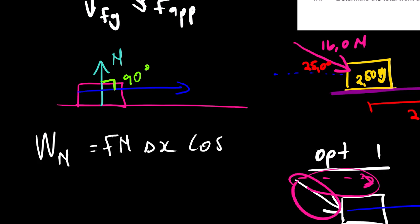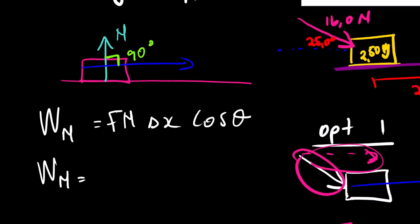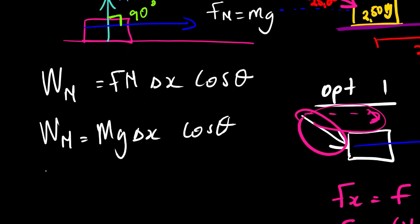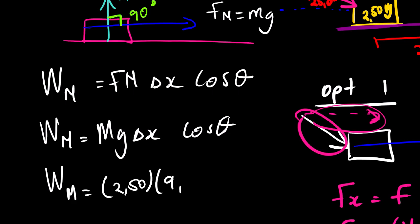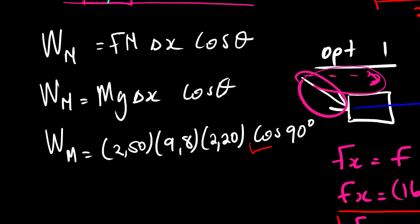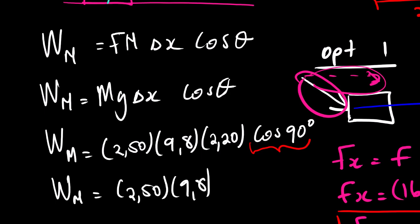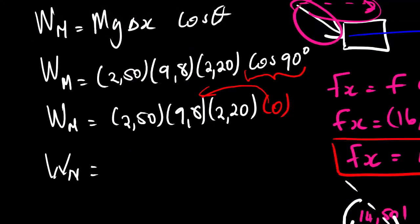Work done by normal force equals the normal force times displacement times cos θ. Since normal force equals mg, we substitute: work equals mg times Δx times cos θ. So work done by normal force equals 2.50 times 9.8 times 2.20 times cos 90 degrees. Since cos 90 equals zero, multiplying by everything here gives zero — so the work done by the normal force is 0 Joules.